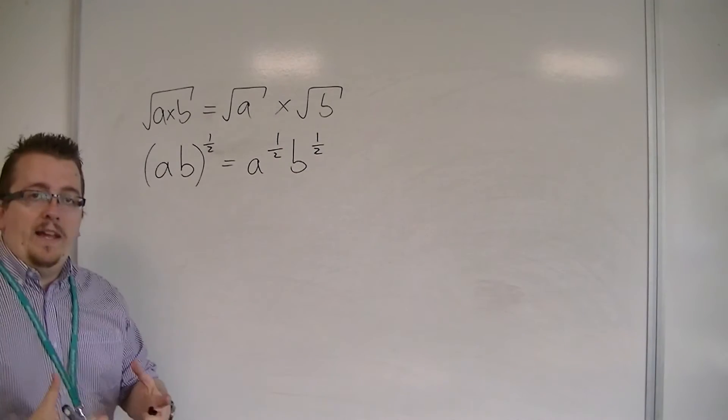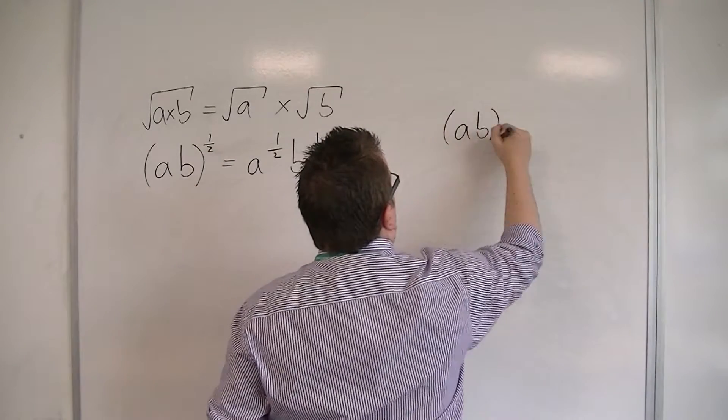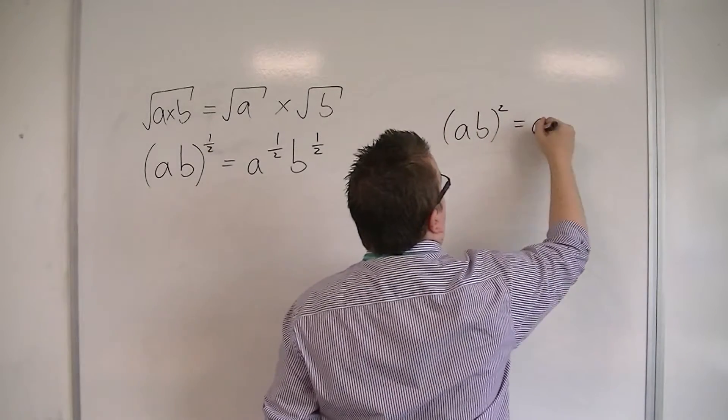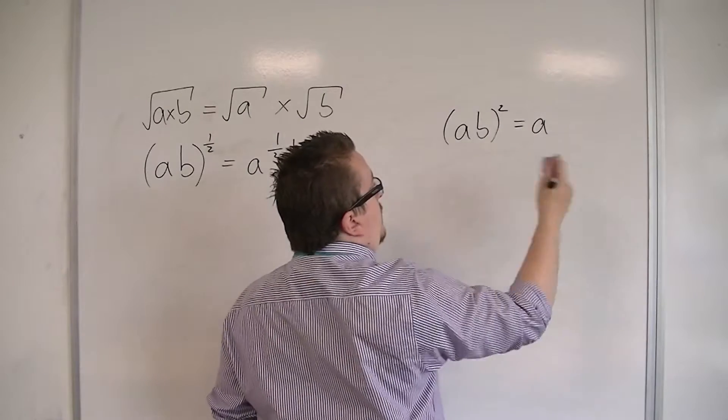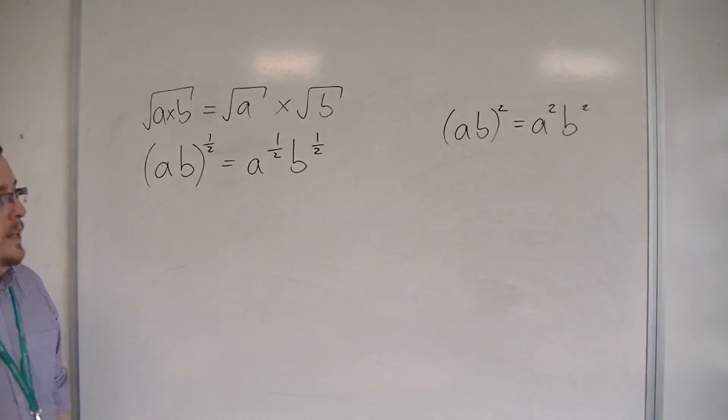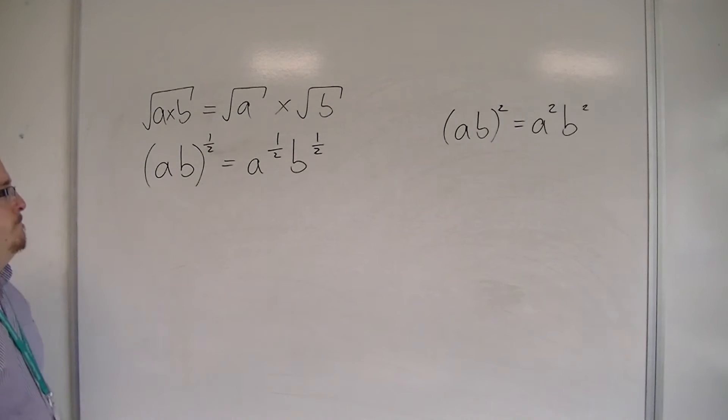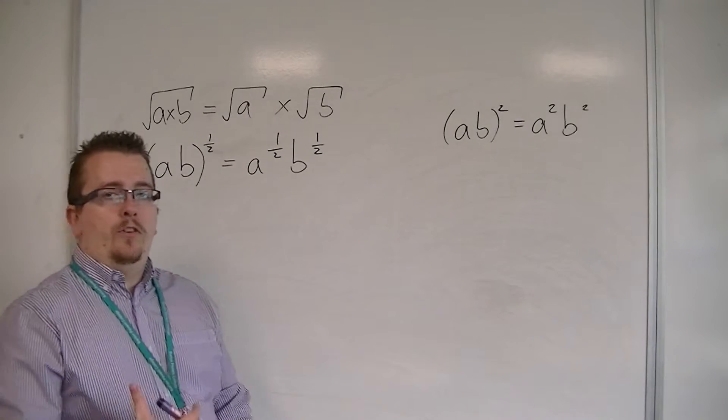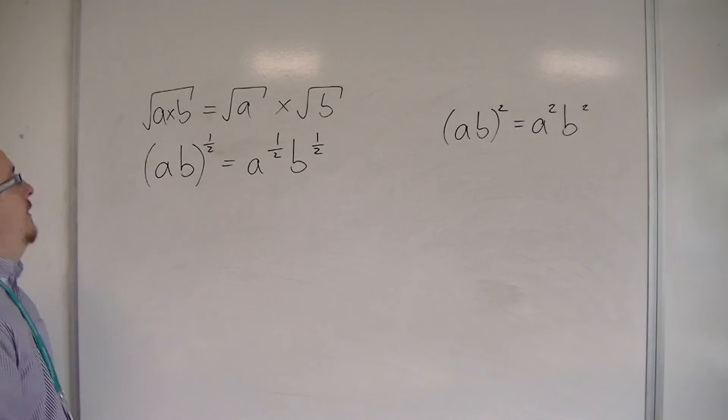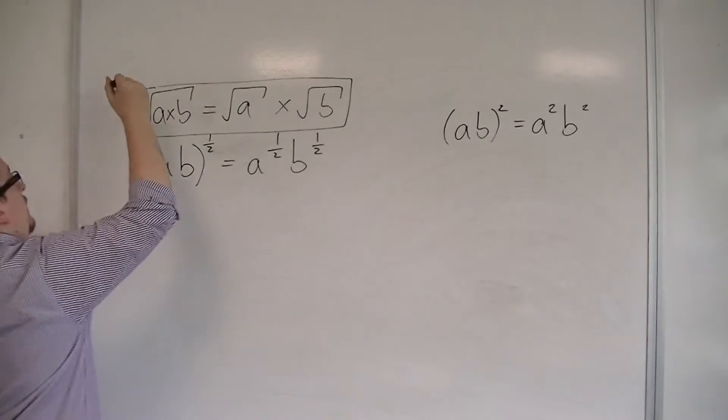We would understand that if I had something like ab squared, then this would be a times b, times a times b, which is a squared times b squared. And in a similar way, that is how these indices are working. So that is why this concept works for us. And why we can simplify surds using this form.